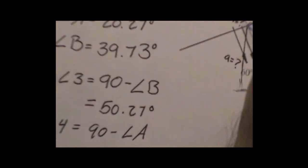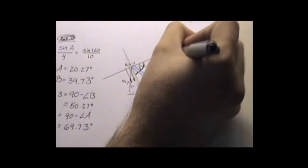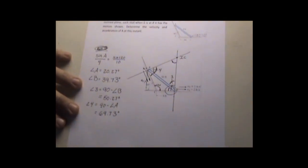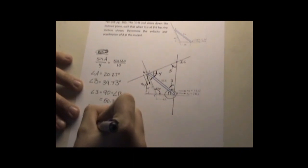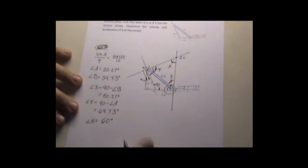Okay, same thing right here, to define this angle right here. To find this angle right here, you do the 180 minus these two angles. Minus 50.27. We get, we'll call angle 5, angle 5 equals a straight 60 degrees,